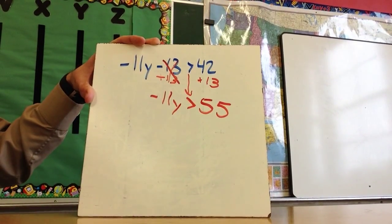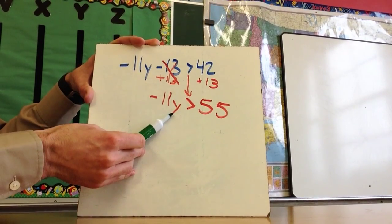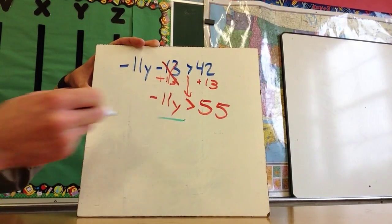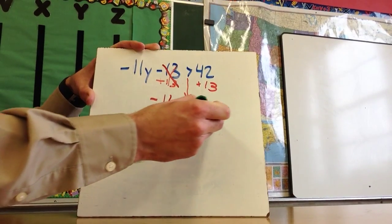From there, I'm going to try to isolate the variable, so I want to get the y by itself. I'm taking the coefficient or the number in front of the y and dividing that to both sides. The number in front of the y is negative 11.